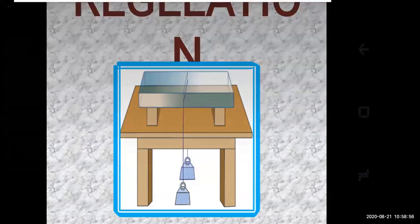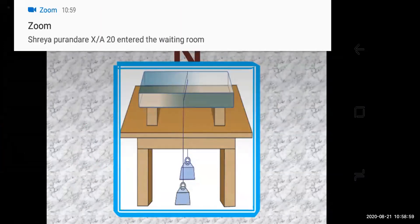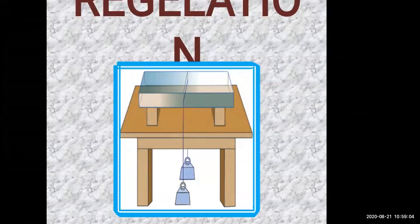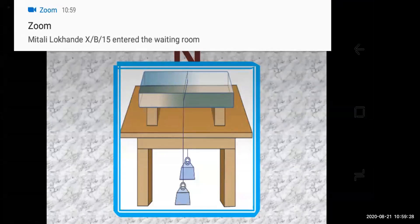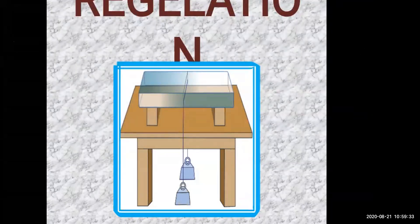Next we move to the topic called regelation. This is a new topic. You might have seen the preparation of ice balls — how ice balls are prepared. First, an ice slab is shredded, meaning it is made into powder form. Then the shredded ice is pressurized around the tip of a stick to prepare the ice ball. If two small pieces of ice are taken and pressed against each other for a while, they will stick to each other.